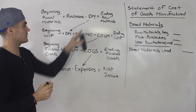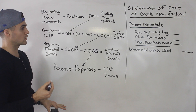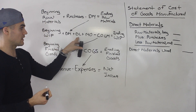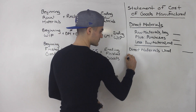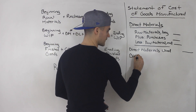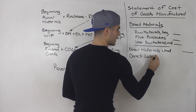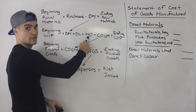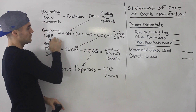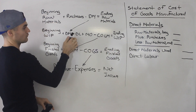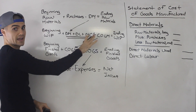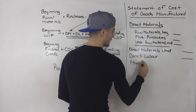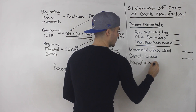Now we're going to write out all of the product costs. We have the direct materials, then we're going to write out the direct labor — that's usually just going to be one single amount. And then you're going to write out the manufacturing overhead. Notice we're not putting the beginning work in process yet — we're starting off with these three items first.